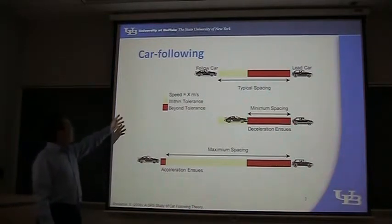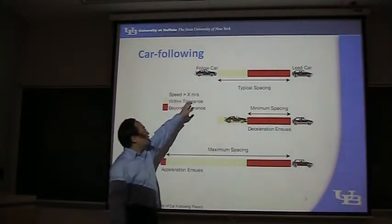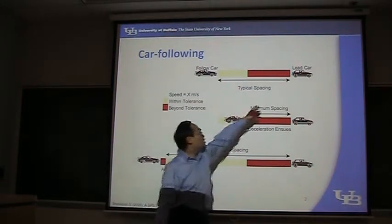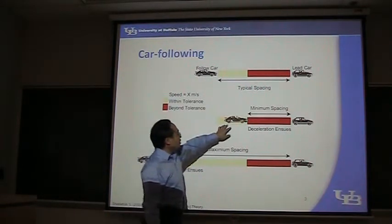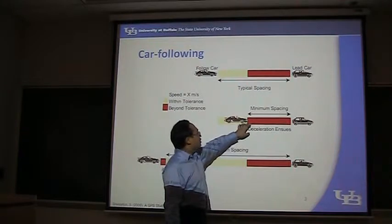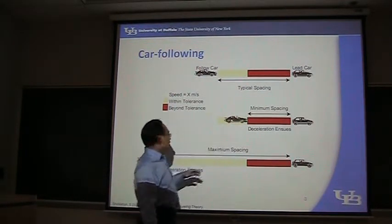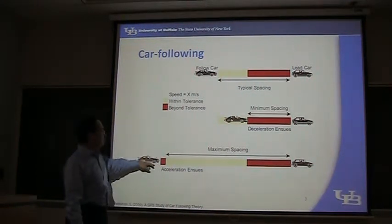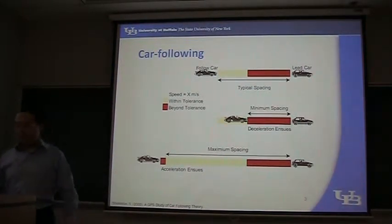The first concept is car-following. What is car-following? In the figure, the first sub-figure shows the follow car, the lead car, and the spacing between them. If the spacing is less than the minimum spacing, the following car will decelerate. If the spacing is too big, the car will accelerate. That's the basic idea of car-following.